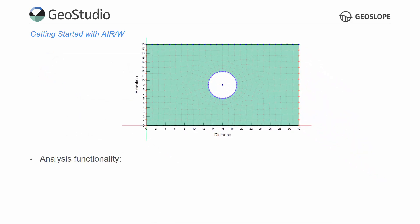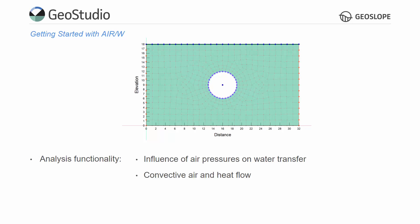AirW is typically used in conjunction with other GeoStudio products and can be used to analyze the influence of air pressure on water transfer, convective air and heat flow, and gas transport with air flow. This tutorial will review examples highlighting the AirW functionality.